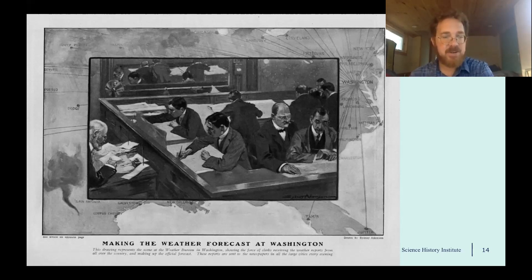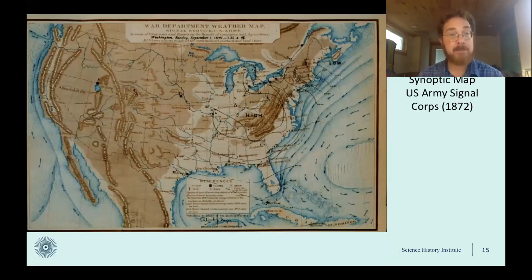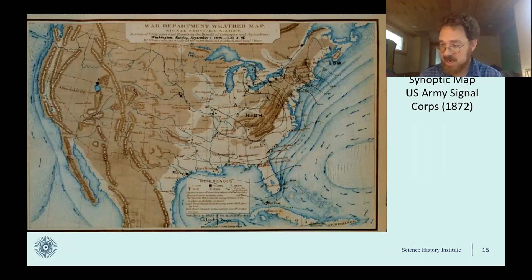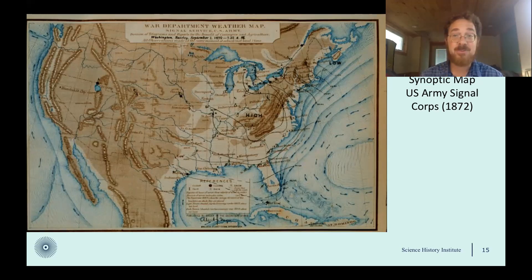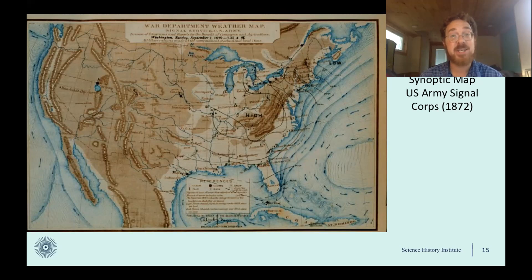The maps used for this analysis were called synoptic maps, because they showed the weather for many places all at once. These maps were printed in newspapers and even drawn on huge glass boards posted in stock exchanges, where the latest weather news could drive trading in grain futures and other financial instruments. There was even one in the cloakroom of the U.S. Senate, updated twice a day, and apparently a constant subject of conversation among senators.